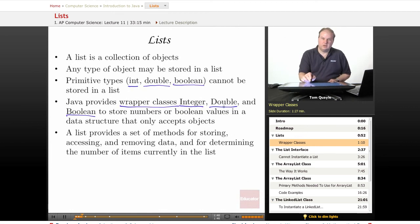Now the wrapper classes, Integer and Double, are part of the AP subset. The wrapper class Boolean is not, but I did want to mention that there is such a wrapper class in case you have a need to use it in any of your code. So Java provides these to allow you to store numbers or boolean values in a data structure that only accepts objects, such as a list or an array.